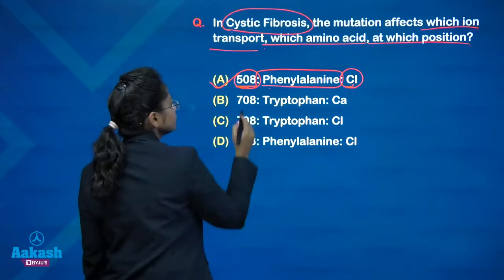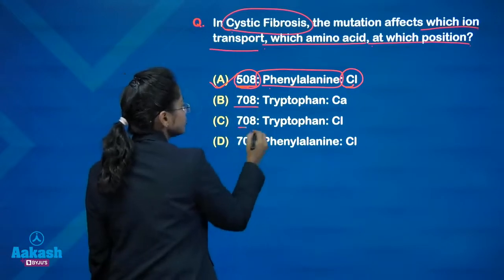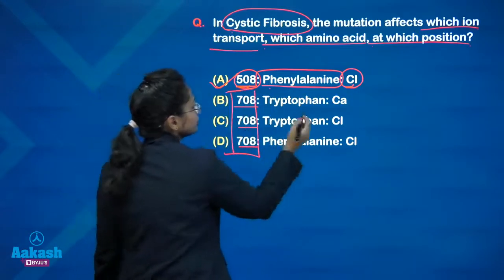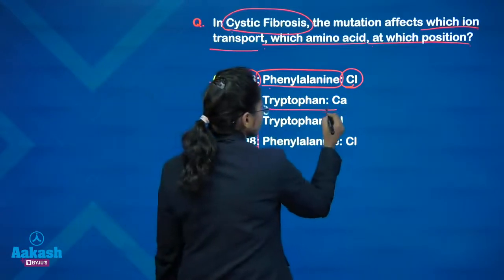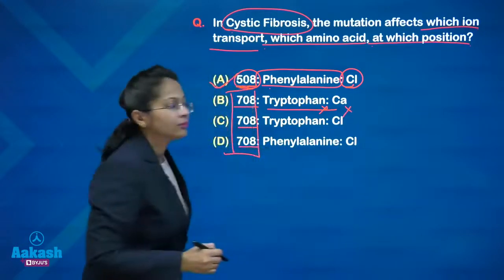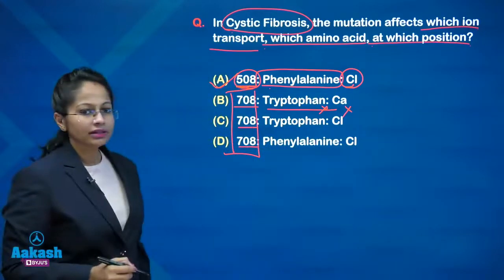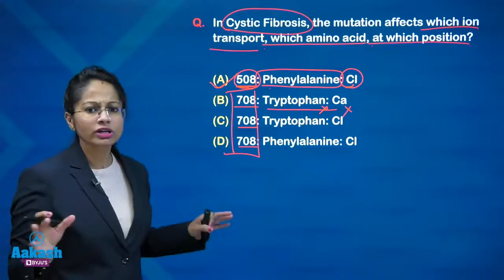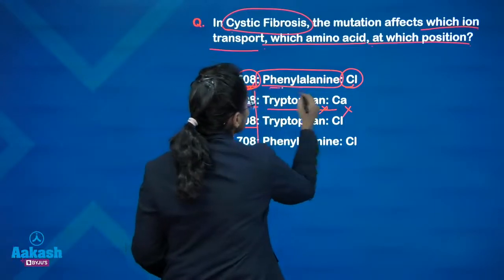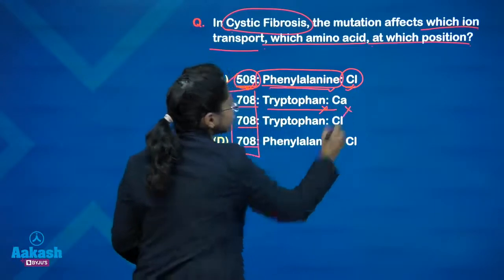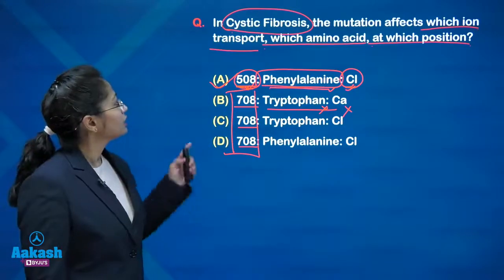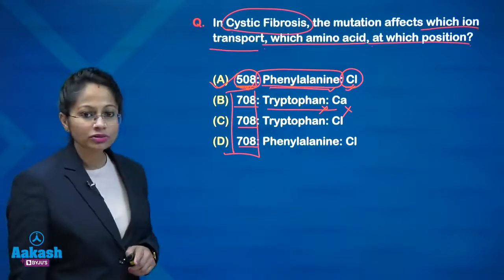The other options given were position 708, tryptophan as the amino acid, and calcium as the ion — none of these are correct. So very directly: position 508, phenylalanine, and chloride is the ion affected in the CFTR in cystic fibrosis.